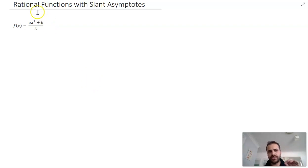We're going to look at rational functions with slant asymptotes, particularly of the form ax squared plus b over x. So what might one of those functions look like? Let's look at a specific example.